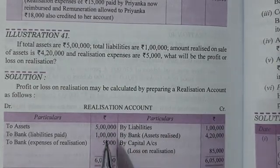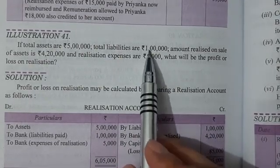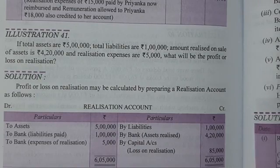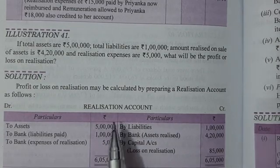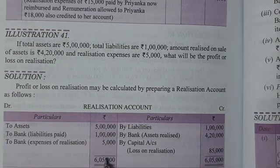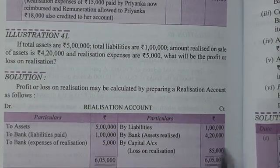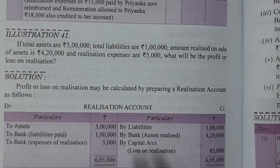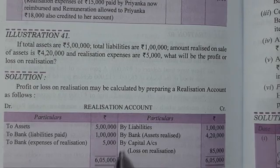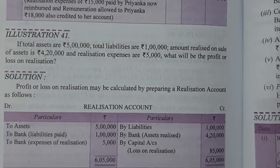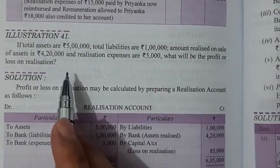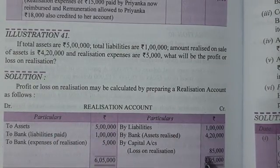If no specific information is given about liabilities, our assumption is that all liabilities are paid off — so bank pays 1 lakh. We find the difference: if the debit side is heavier than the credit side, the difference is a loss on realization; if the credit side is heavier, it is a profit. In this question, the loss on realization is 85 thousand rupees.